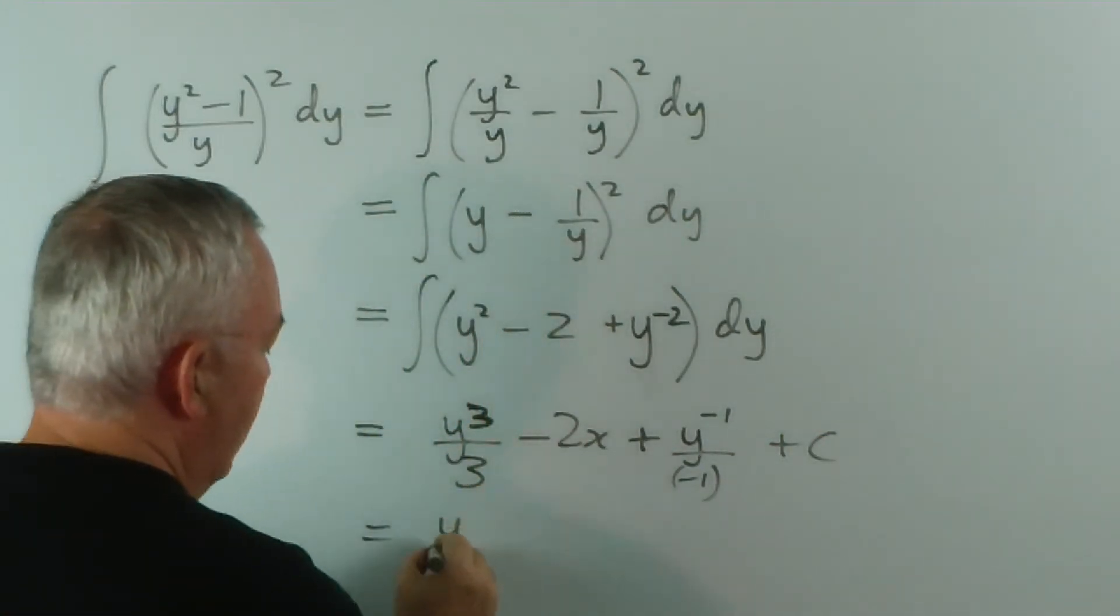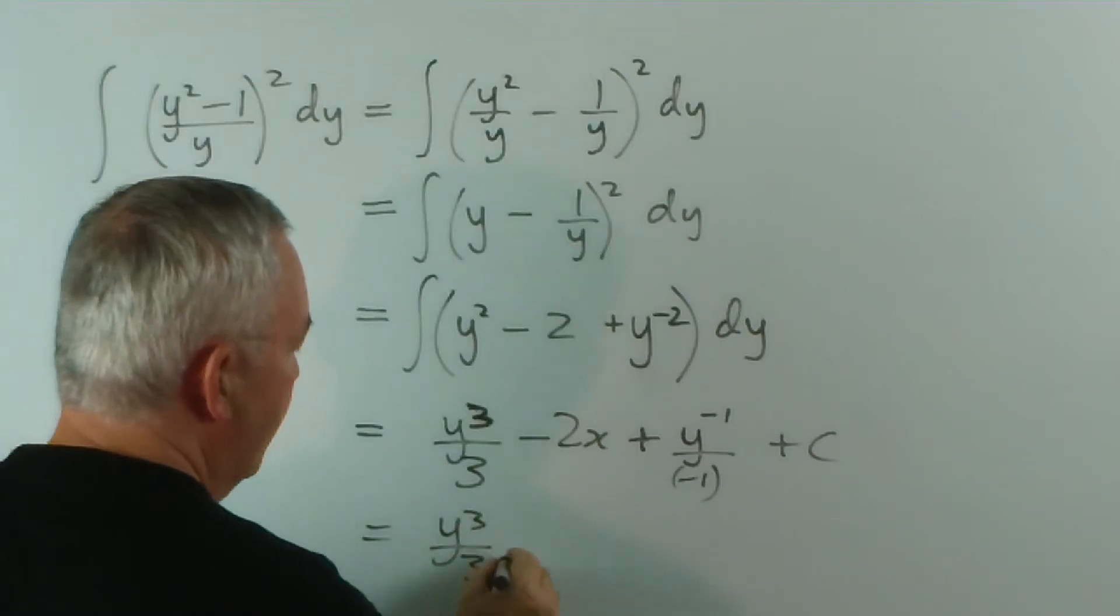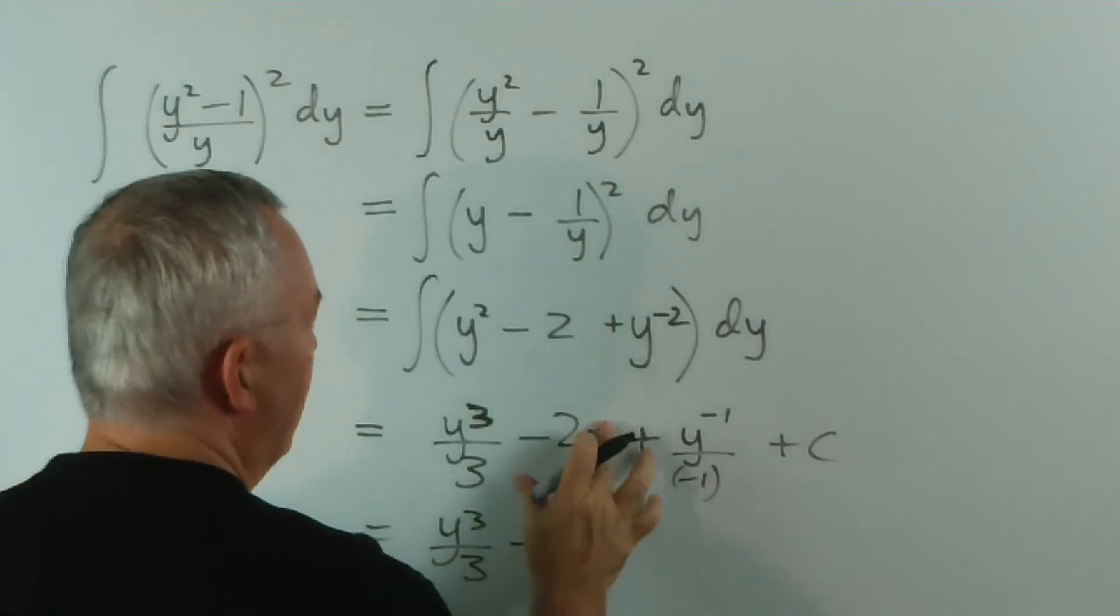So if we tidied that up, we'd have y cubed on 3 minus 2y plus y to the minus 1 plus c.